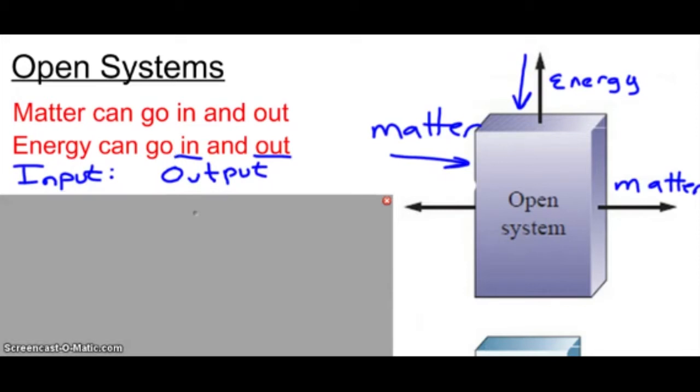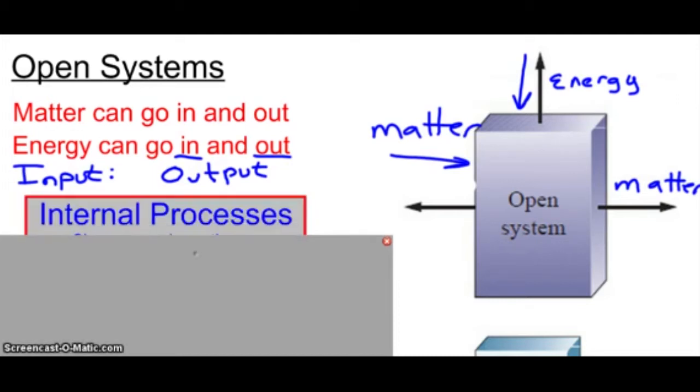All right, the other vocabulary I want you to know for systems, and we're just going to put it here underneath open systems, are internal processes. So if, let's say we have an open system like my classroom. People can walk in, people can walk out, hot air can wave in, energy can wave in, however.